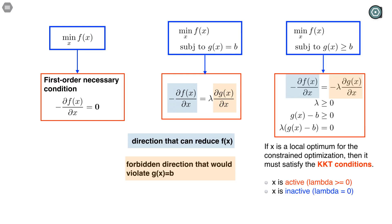Now what about minimizing f(x) with respect to an inequality constraint like g(x) ≥ b? Let's assume g(x) is some kind of concave function, so g(x) > b means the feasible region is actually a convex region in x. Also assume f is smooth so we can take derivatives. Here we have to differentiate two cases. Suppose x is a solution — in case one, x is inside this convex region, so we can always place a small ball around x, a small neighborhood, and if we pick a small enough radius, the whole neighborhood is inside this convex region.